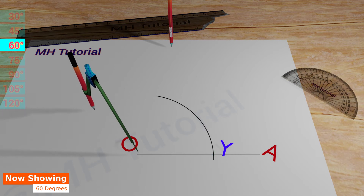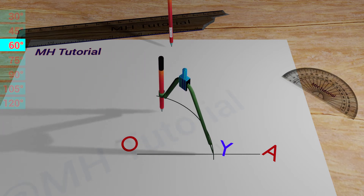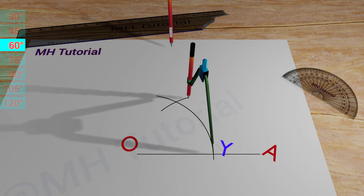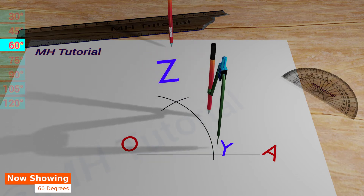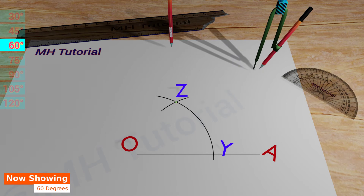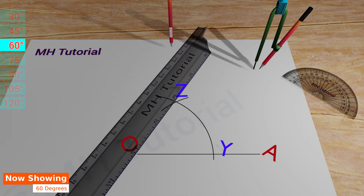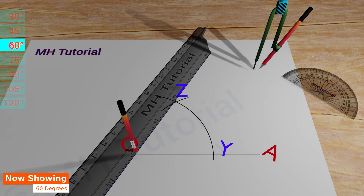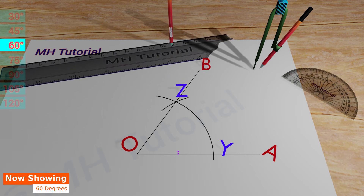Then, another circle arc of the same radius is drawn with the spike placed at point Y. It intersects the previous arc at the point Z. Then, align the ruler about the point O and the point Z, and draw a line segment between them. This line segment is named OB. Thus, the angle AOB is a 60 degree angle.